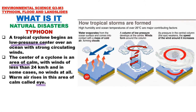Here is a picture of how tropical storms are formed. High humidity and ocean temperatures of over 26 degrees Celsius are major contributing factors. Water evaporates from the ocean surface and comes into contact with a mass of cold air, forming clouds. When the ocean temperature is 26 degrees Celsius and above, water begins to evaporate due to heat, rises, comes in contact with cold air, and clouds are formed.